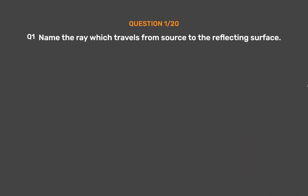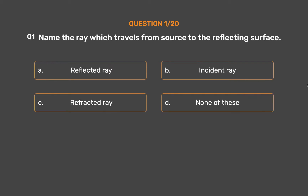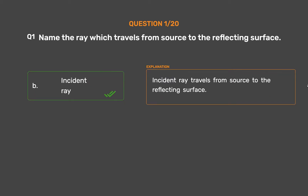Question number 1: Name the ray which travels from source to the reflecting surface. Option A: Reflected ray. Option B: Incident ray. Option C: Refracted ray. Option D: None of these. The correct answer is Option B, Incident ray. The incident ray travels from the source to the reflecting surface.